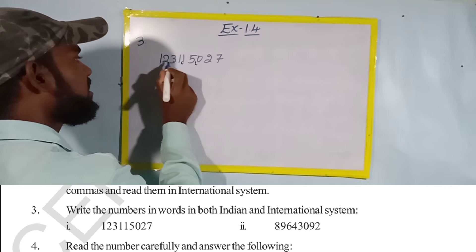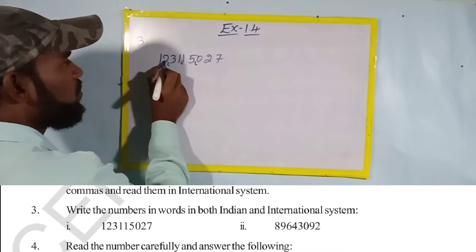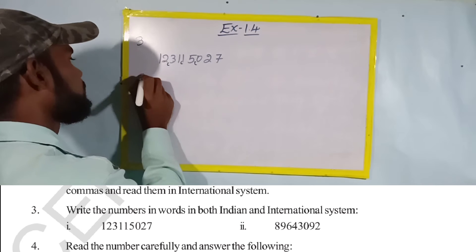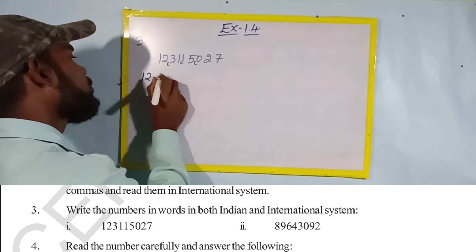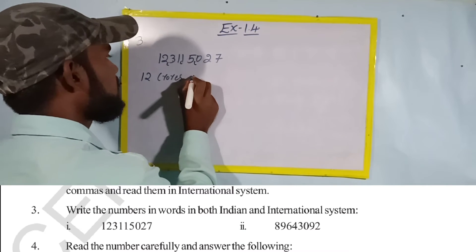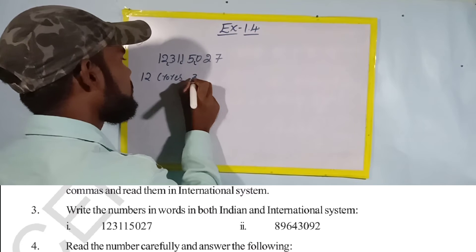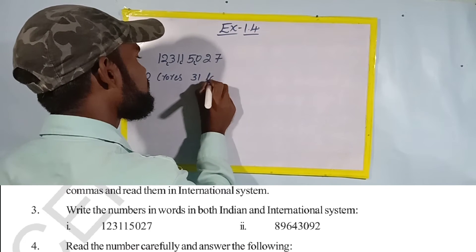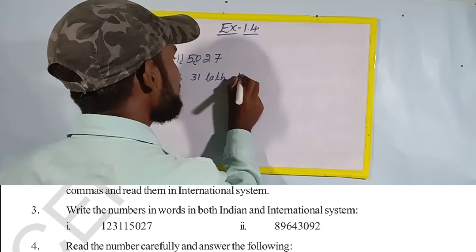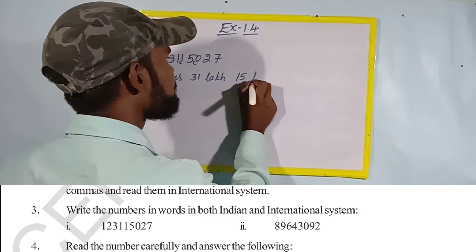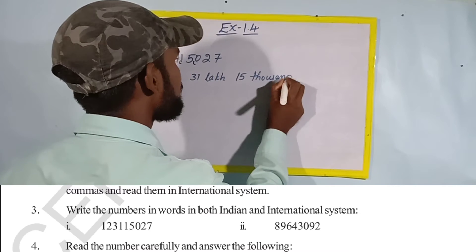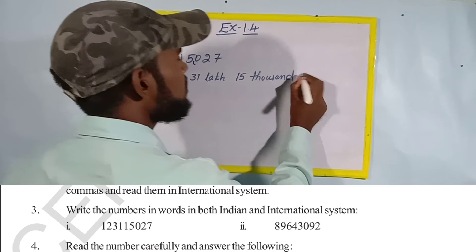Reading 123,115,027 in the Indian system: twelve crores, thirty-one lakhs, fifteen thousand, twenty-seven.